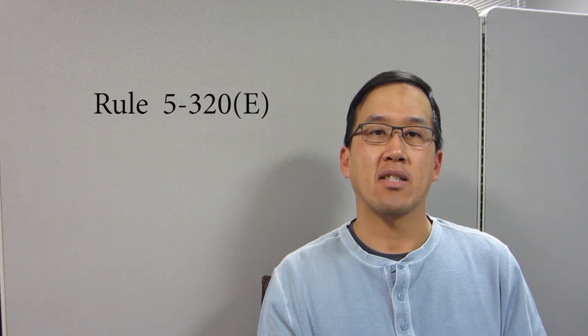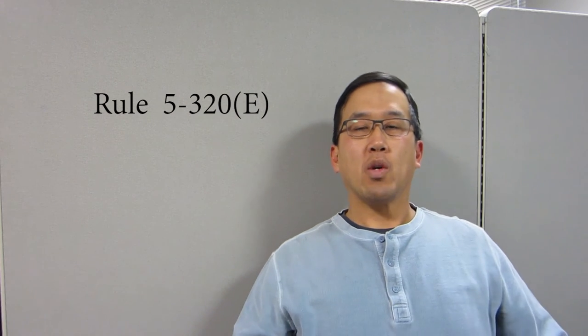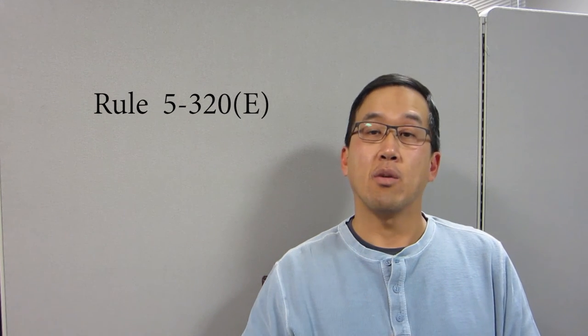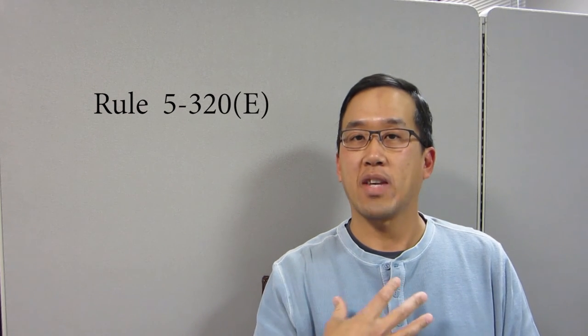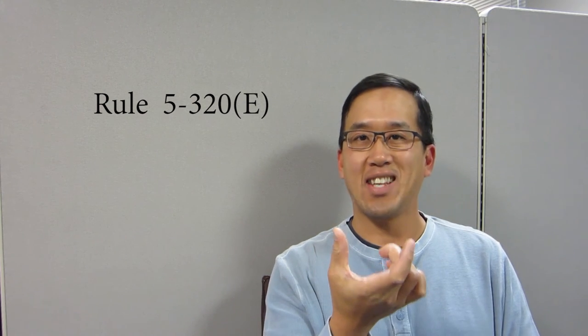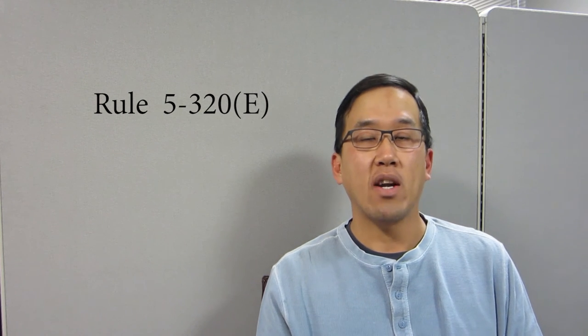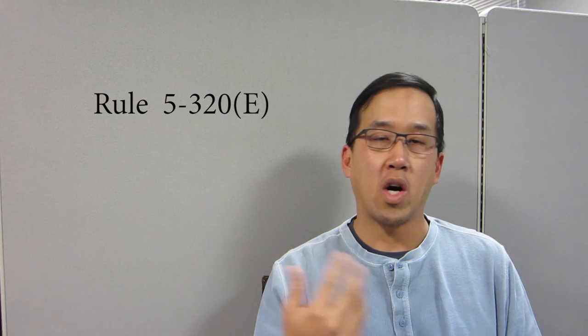The second rule I'm going to go over is 5-320E. And this rule will probably make sense, make a lot of sense to you if you've ever been on jury duty before. The rule basically says that if you're a lawyer, you are generally forbidden from contact with a juror, even if it's on a case that you are not on. The reason you have to wear that tag is that it basically marks you so that all the lawyers roaming around the courthouse, when they see you, they know you're a juror and they will purposely not talk to you. So that's what 5-320E says.